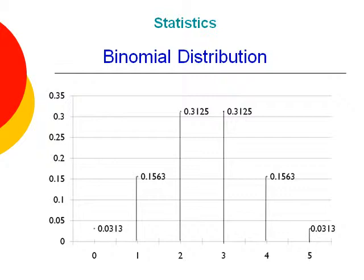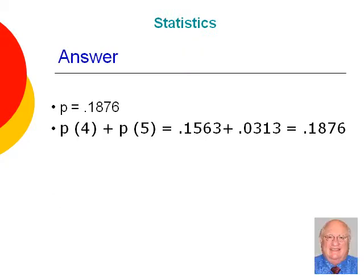Before going to the next slide, see if you can answer this question. What is the probability of receiving four or five heads out of five coin flips? The answer is p equals 0.1876. Here you would use the additive rule and sum the probability for four and the probability for five. Here is another question.